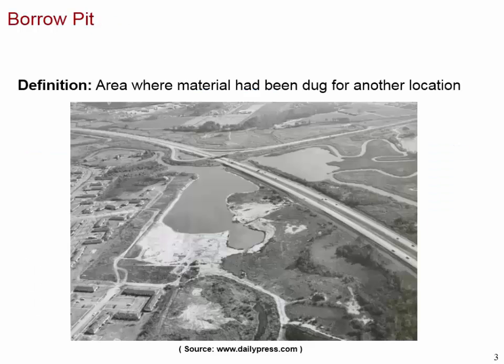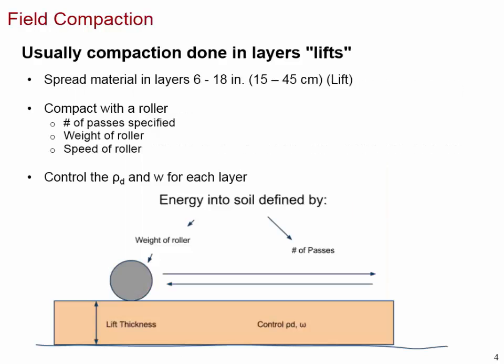The borrow pit is the area where material has been dug for use at another location. Field compaction is usually done by spreading the material using scrapers or a bulldozer over a layer, and then compacting it with a roller.